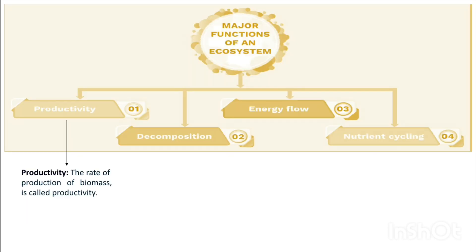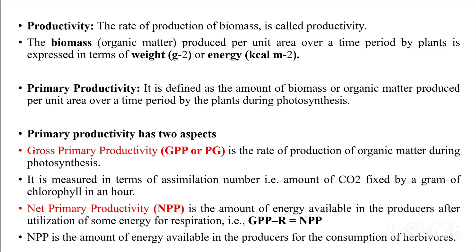The major functions of an ecosystem are: productivity, decomposition, energy flow, and nutrient cycling. Productivity is the rate of production of biomass — the organic matter produced per unit area over a time period by plants in terms of weight or energy. Primary productivity is defined as the amount of biomass or organic matter produced per unit area over a time period by green plants during photosynthesis.